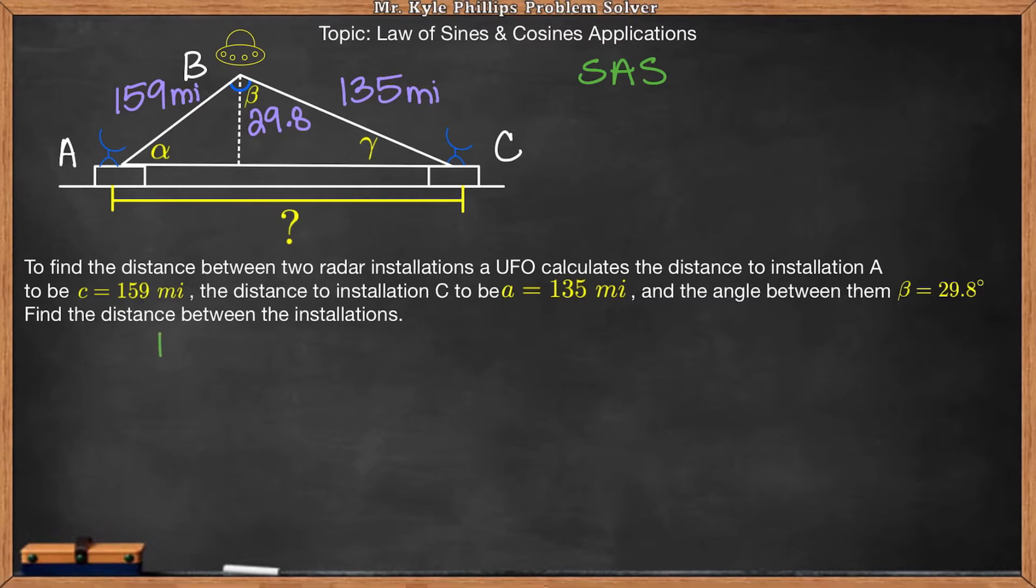So that is leg B squared equals leg A squared plus leg C squared minus 2 times A times C times the cosine of angle B.